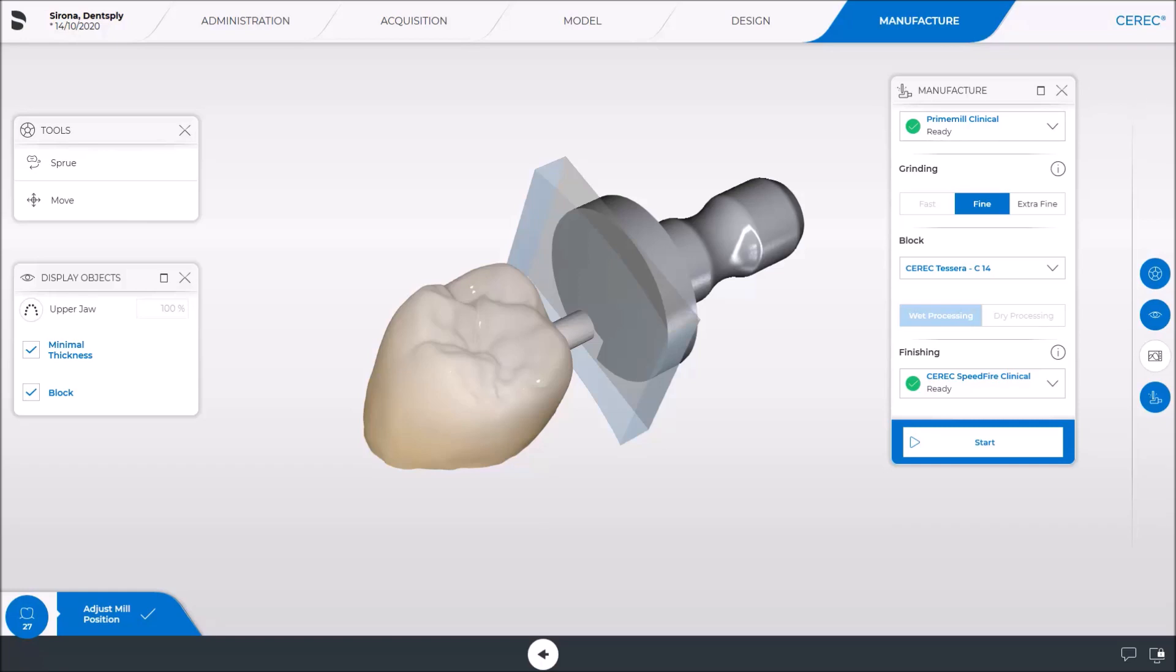The CEREC to CERA block has been inserted in the CEREC PrimeMill and the touch process was performed. Accordingly, both devices are ready for the manufacture of the restoration.